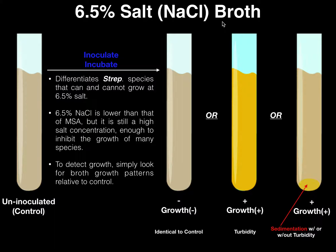One thing this test can be used for is if you know you have a Streptococcus species, you can differentiate Streptococcus species based on their ability to grow at this salt concentration or whether they die. It's a high salt concentration — not as high as 7.5% from MSA, but still pretty high and inhibits a lot of bacteria.